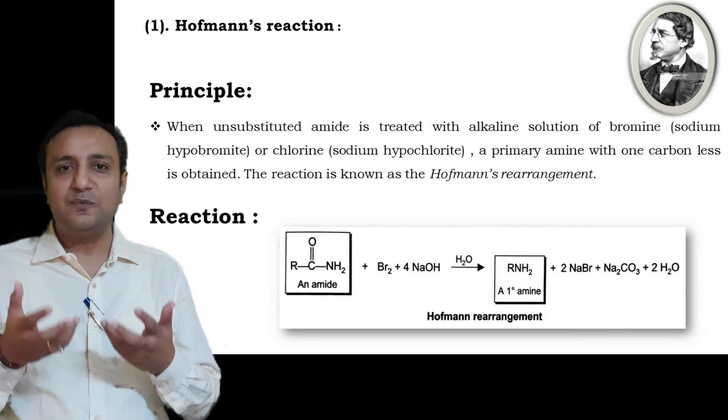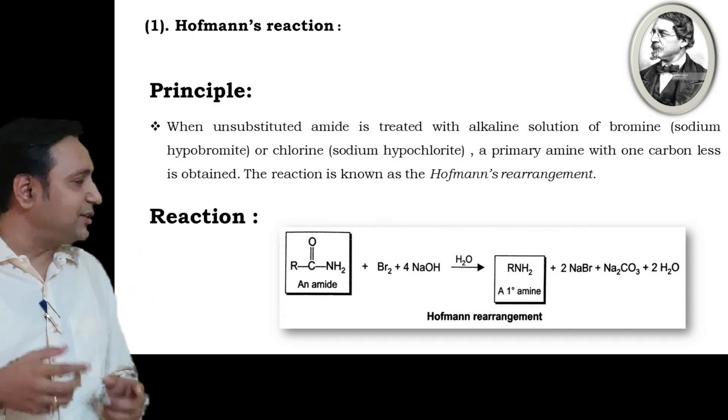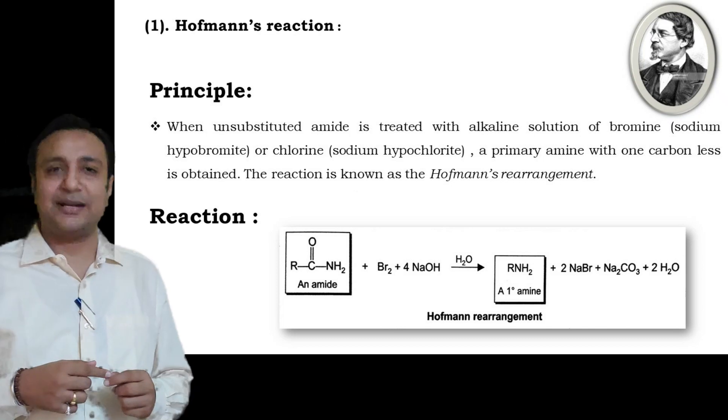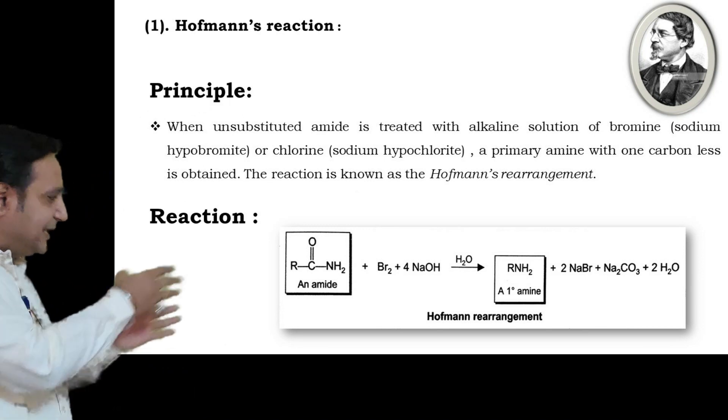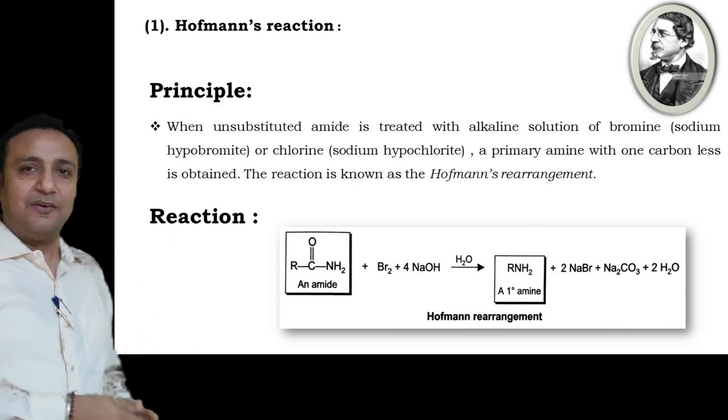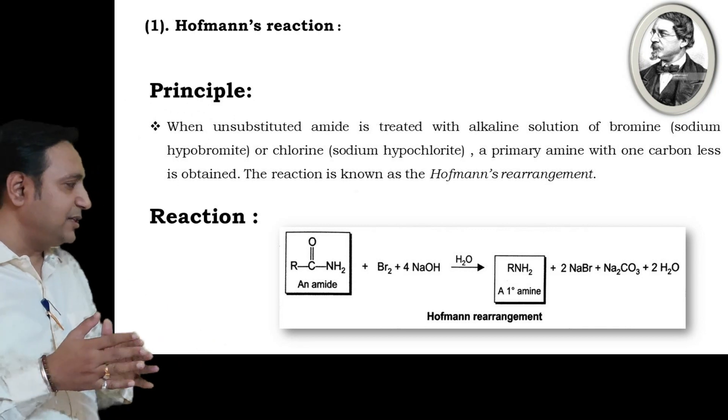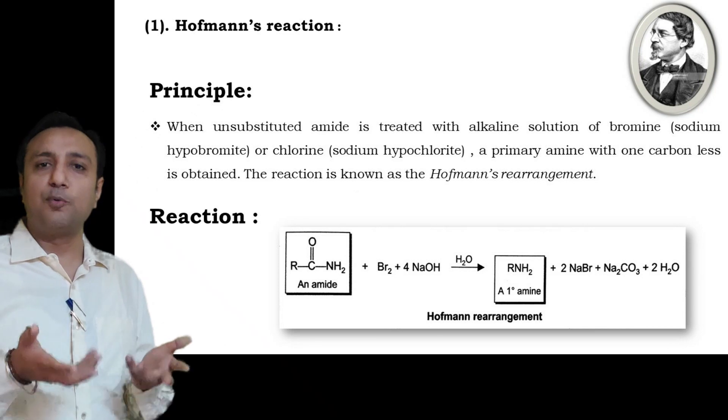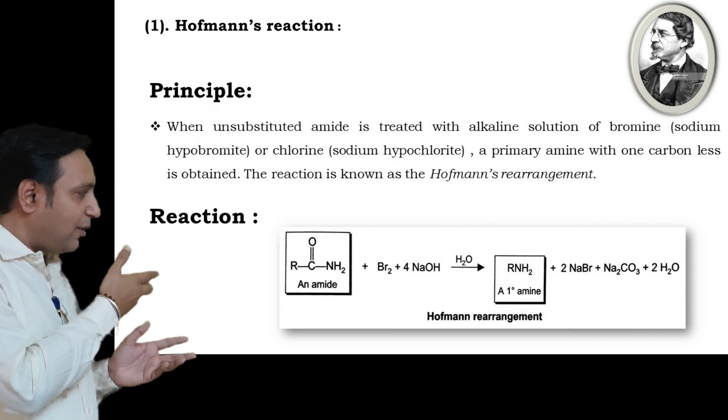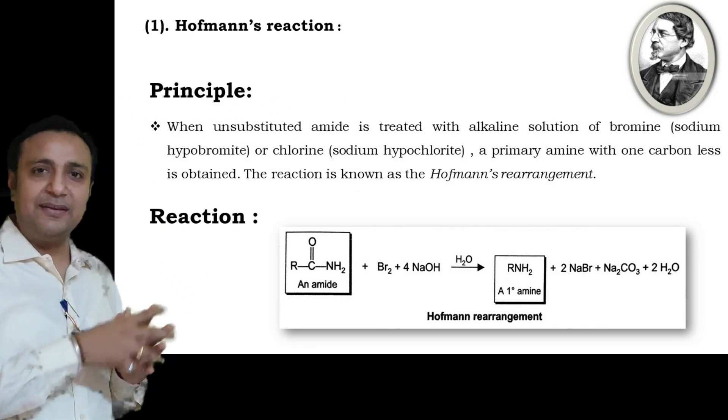The reaction is given on your screen. From this reaction, when amide is reacted with Br2 and NaOH, these combine to form sodium hypobromite, which converts the amide into a primary amine having one carbon less. Along with this, NaBr, Na2CO3, and H2O are obtained as by-products.